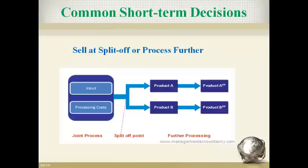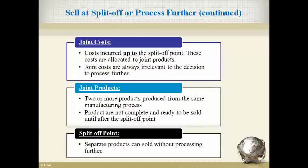The last common short-term decision is whether to sell a product at the split-off point or to process it further into a different product that can be sold for more. These products are jointly manufactured — called the joint process — until separate products evolve from the production process. When the products are processed to the point they can be sold, called the split-off point, the company must decide whether to incur more costs and make the products into different items that can be sold for a higher sales price. Joint costs are the initial cost to manufacture products to the point where separate products can be sold, and these must be allocated to each separate product. The decision of whether to process products further is made at the split-off point.